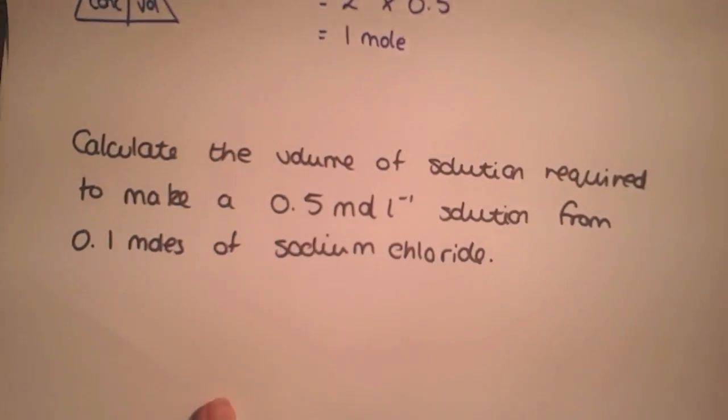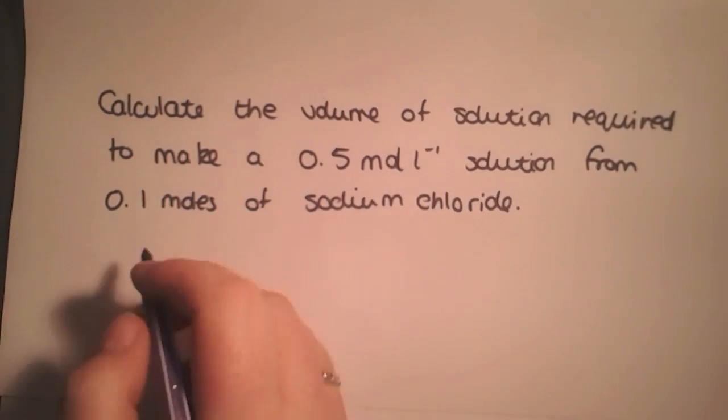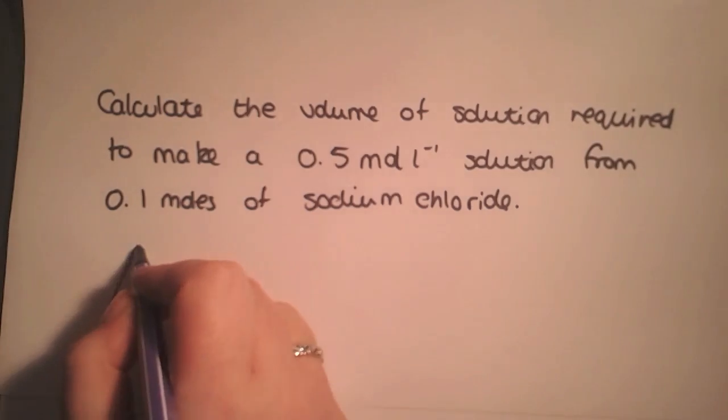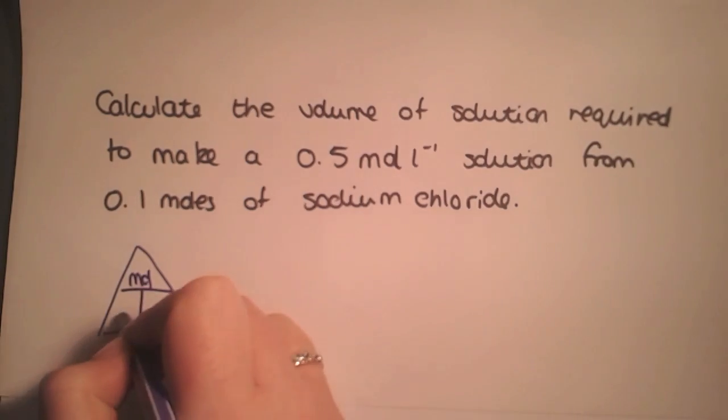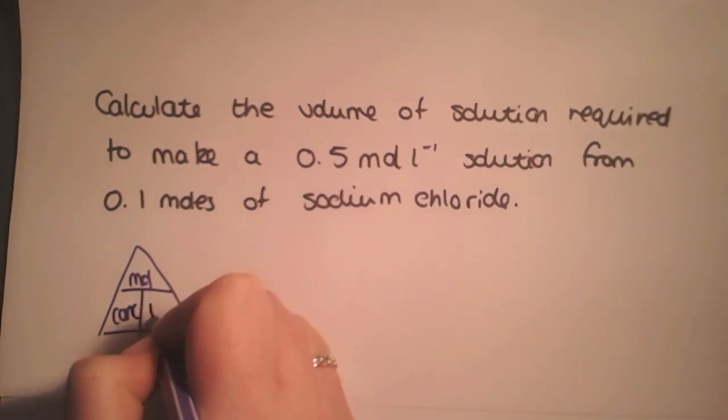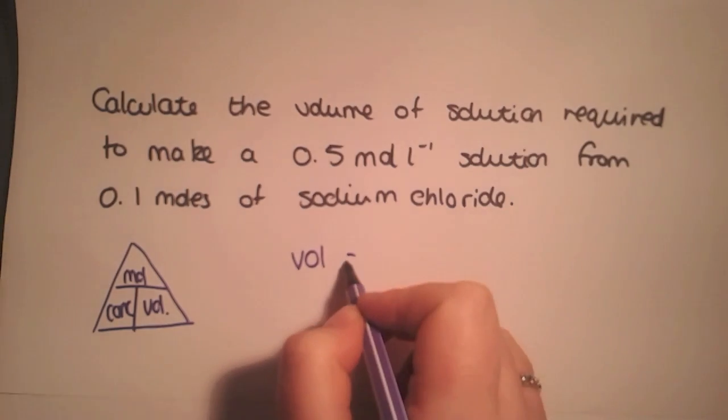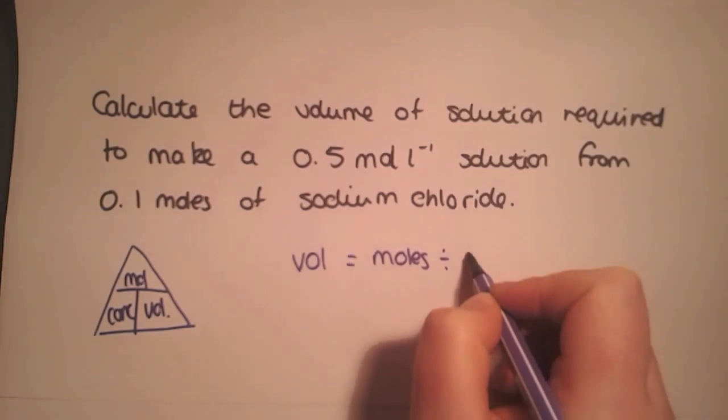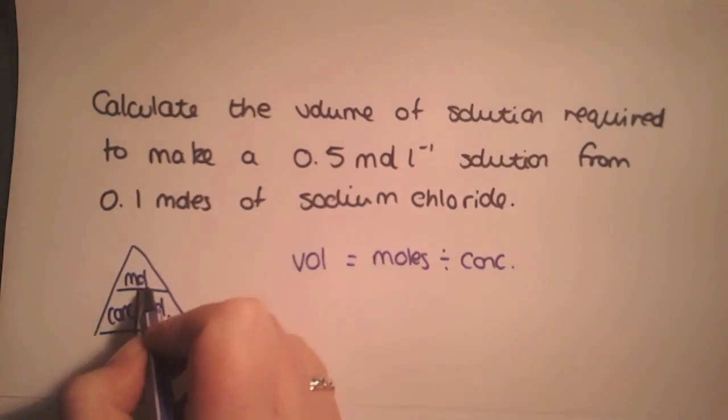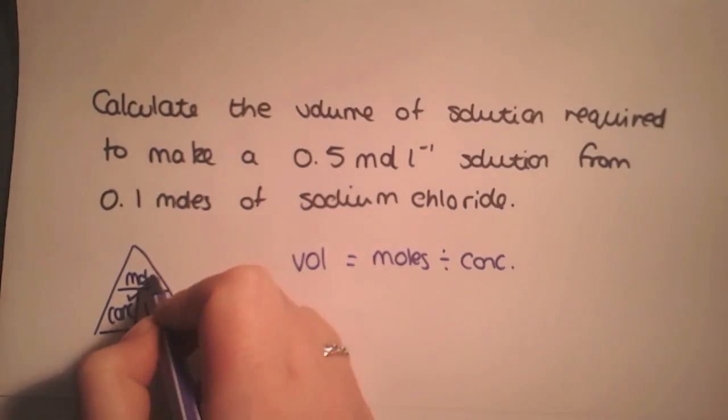The final thing you could be asked to do is to calculate the volume required to make a solution. So again, you're using the same triangle. This time you need to rearrange for volume, which is moles divided by concentration. In the question, we've been given a concentration of 0.5 and moles of 0.1, so we can calculate the volume.